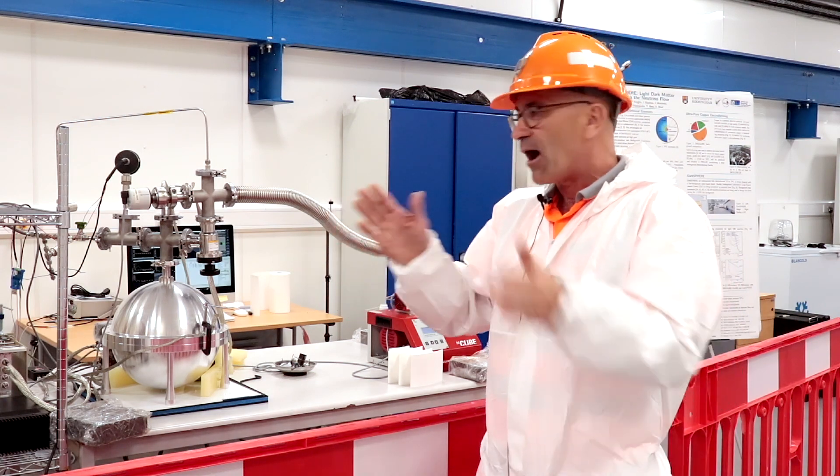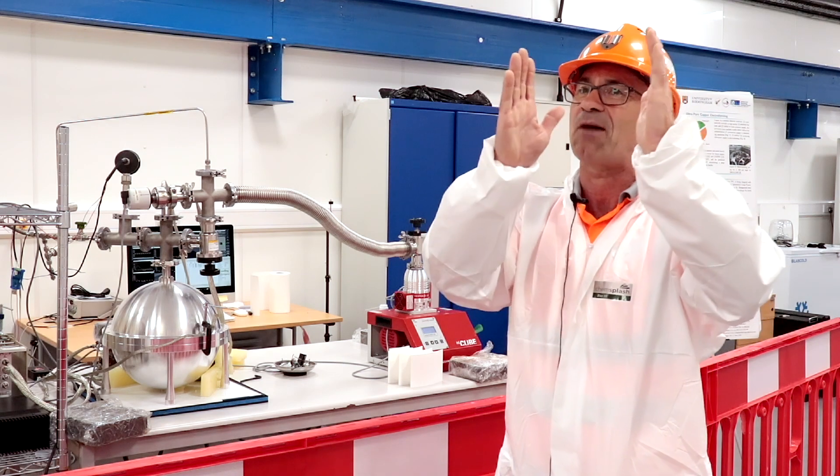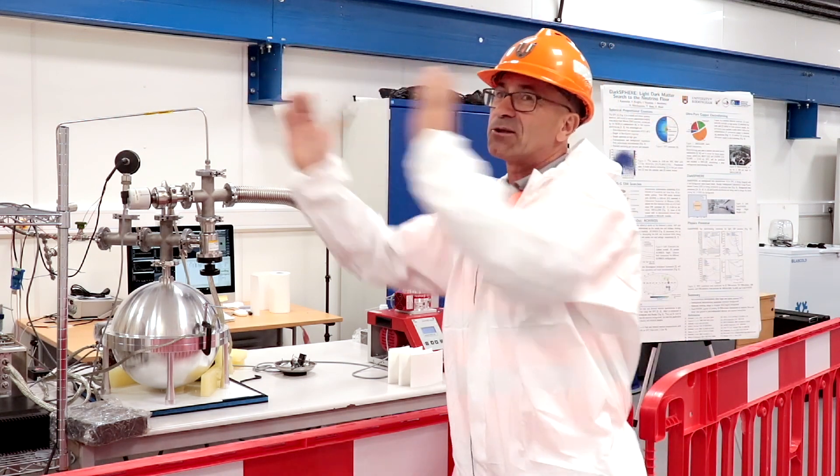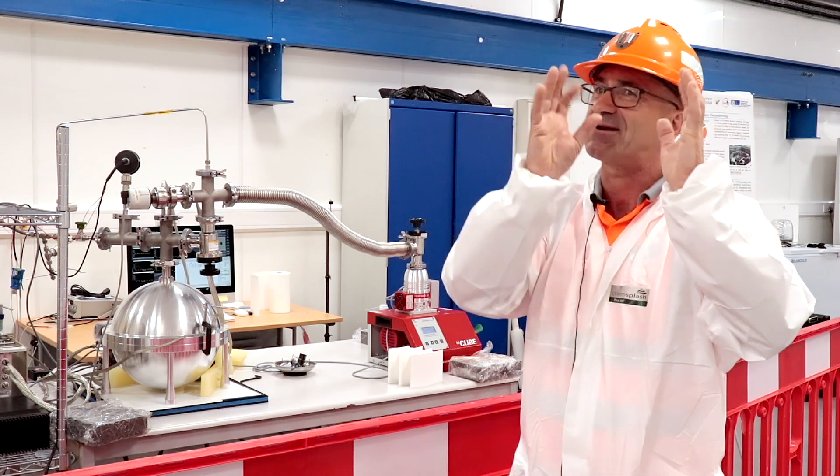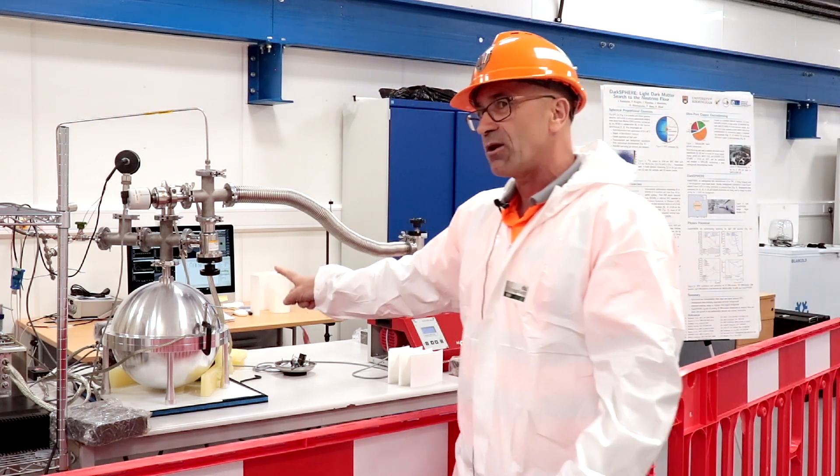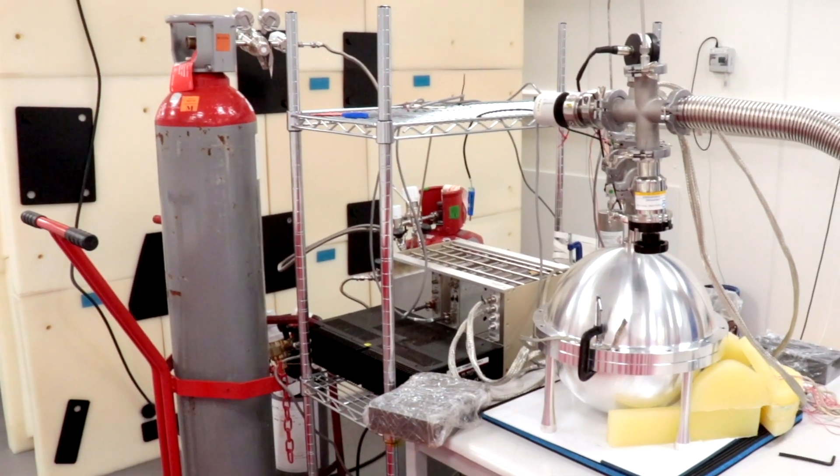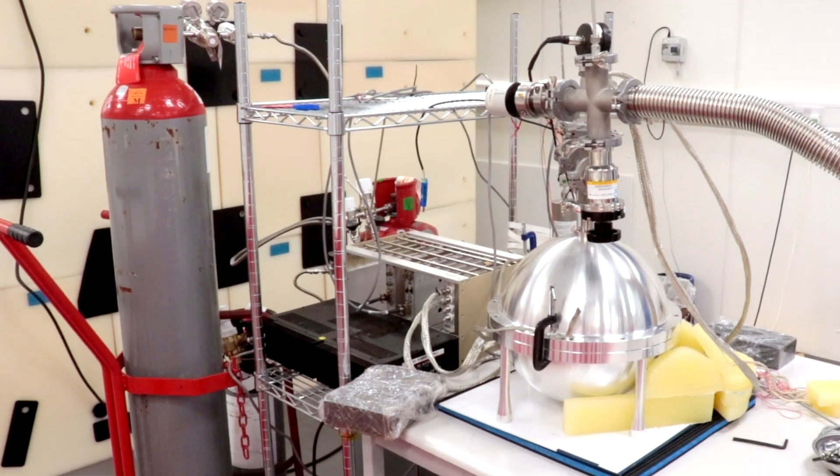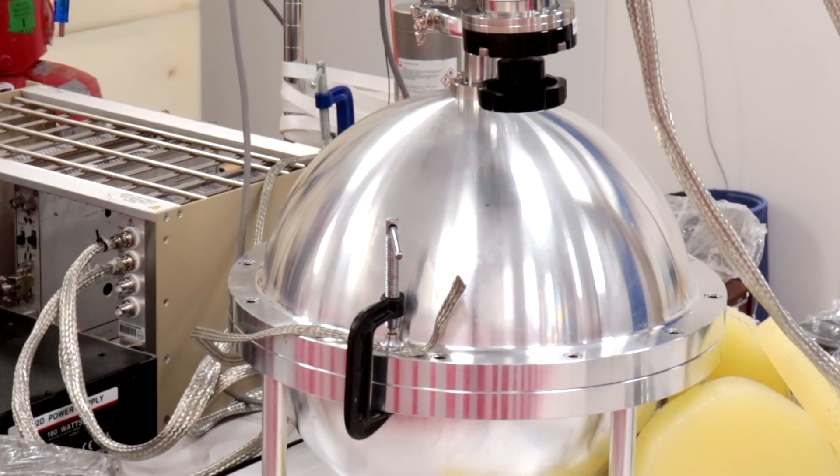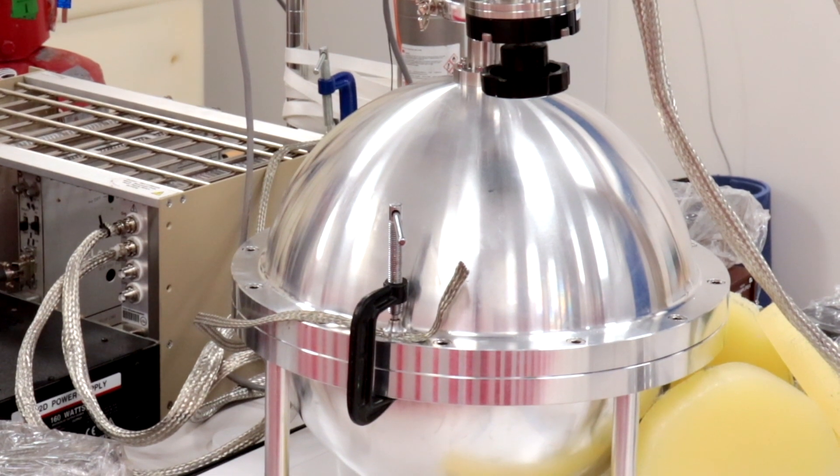This one is trying to be very clever and rule out very low mass dark matter particles. Some people think dark matter particles are very heavy. Some people think they're going to be very light. It's quite hard to detect light particles and this one is trying to be clever and trying to do that. It's a small sphere with a gas in it and a very sensitive bit at the centre which means when particles come in it can detect very tiny signals. It can detect lower mass dark matter particles.